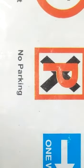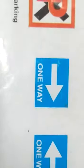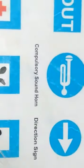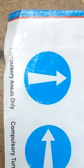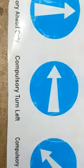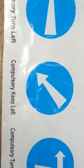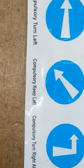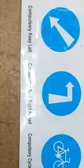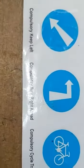And this is no parking. This symbol belongs to one way. And this is one way. This is no exit. No entry. And this symbol belongs to compulsory sound horn. This symbol is a direction sign. And this symbol belongs to compulsory ahead only. This is compulsory turn left. This symbol belongs to compulsory keep left. And this symbol belongs to compulsory turn right ahead.